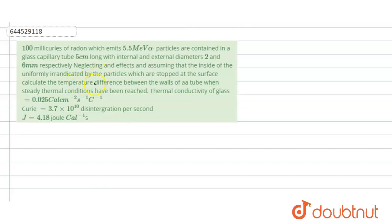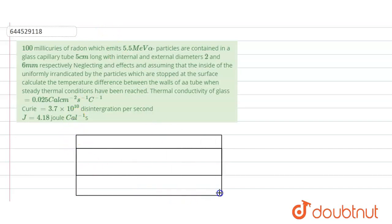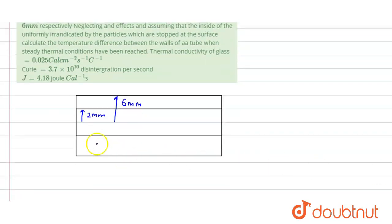There would be a temperature difference because the alpha particles carry energy and transfer that energy to the tube. Let's consider one cross-section of the tube — a circular section where the internal radius is 2 mm and the external radius is 6 mm. The heat transfer occurs radially through the cylindrical wall, similar to a reaction taking place with heat transfer through the surface.